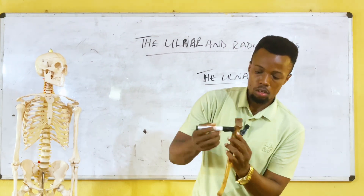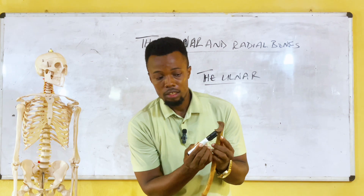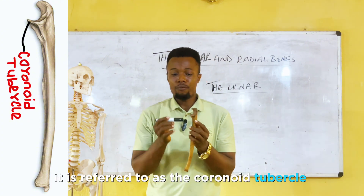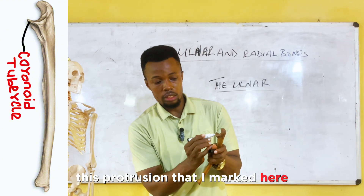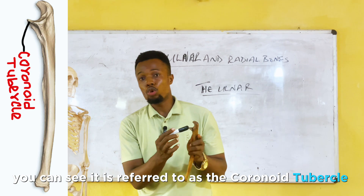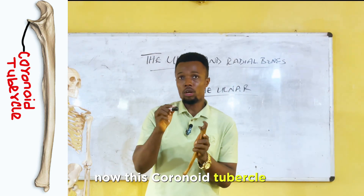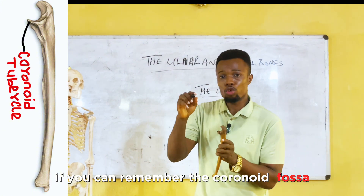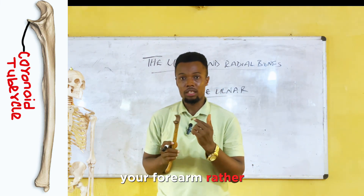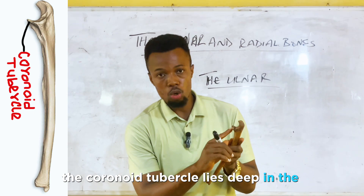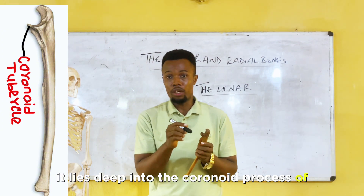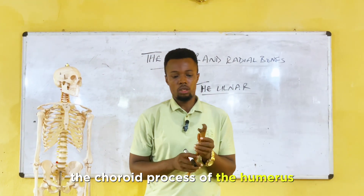The olecranon process lies deep into the olecranon fossa when you extend your elbow. There is also another protrusion here referred to as the coronoid tubercle. When you flex your forearm, the coronoid tubercle lies deep into the coronoid fossa of the humerus.